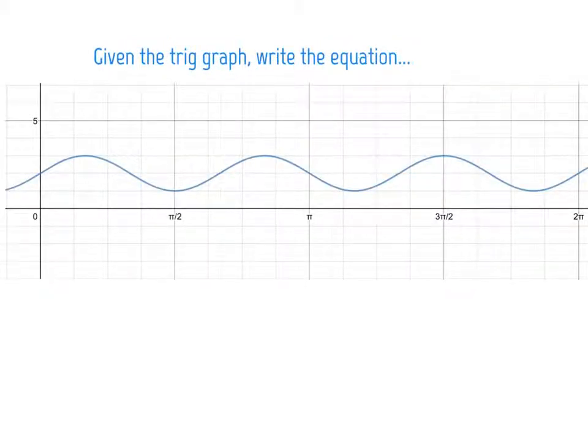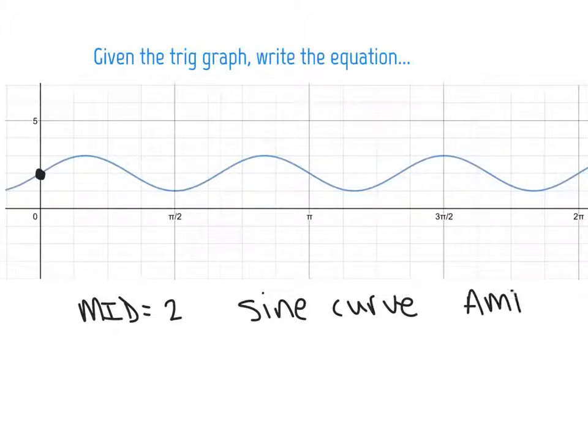I actually find this type of question more enjoyable where they've given me the graph, and I've got to try to write the equation. It looks like the maximum height is going to be 3 units. The minimum height is going to be 1 unit. What's the average of 3 and 1? Well, the average is 2. So, you know your midline is at 2. And what you'll notice is that this graph starts right at 2. So, you know right away it's got to be a sine curve because it starts on that midline. Now, how big is the amplitude? How high up did you go? Well, you only went 1 unit up.